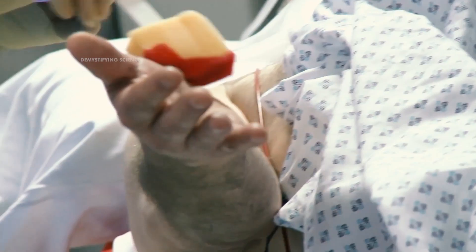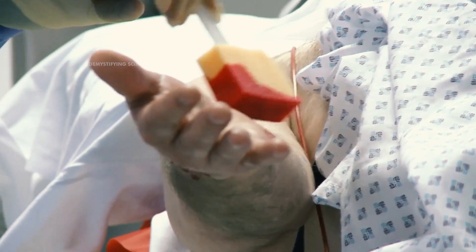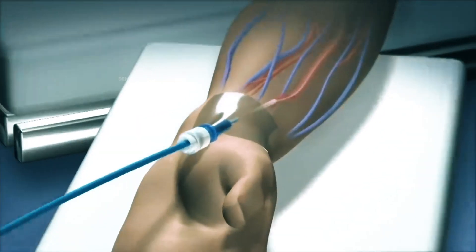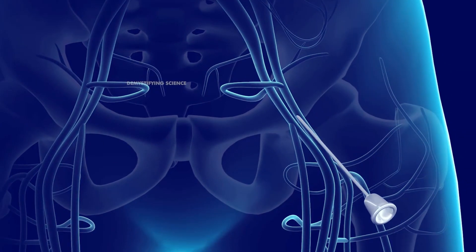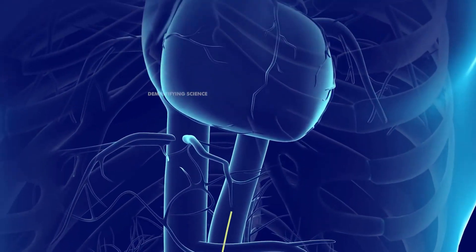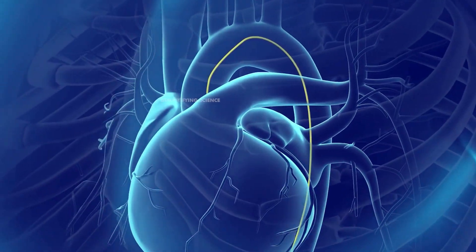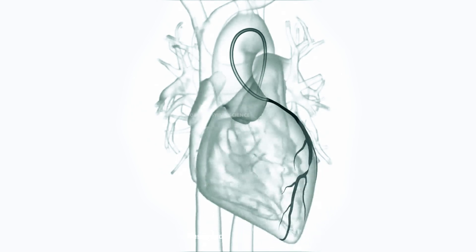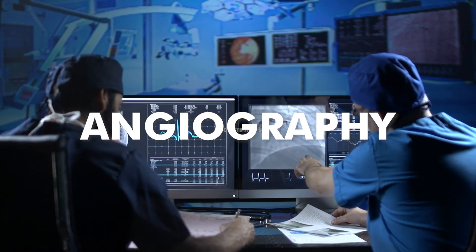Before beginning angioplasty, a healthcare professional will clean and numb the area where the catheter enters the body — usually the groin, but sometimes the wrist. Next, a doctor inserts the catheter into the artery and directs it towards the coronary artery, watching its progress on an x-ray feed. Once the catheter is in position, the doctor injects a contrast dye through the catheter, which helps identify blockage around the heart. This process is called angiography.